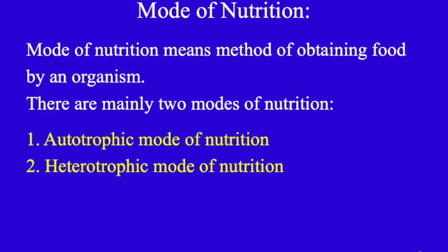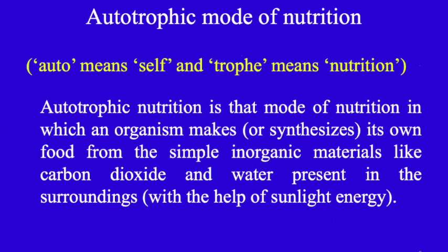Mode of nutrition means the method of obtaining food by an organism. There are mainly two modes: autotrophic mode of nutrition and heterotrophic mode of nutrition. Auto means self and trophy means nutrition. Autotrophic nutrition is that mode in which an organism makes or synthesizes its own food from simple inorganic materials like carbon dioxide and water, with the help of sunlight energy.